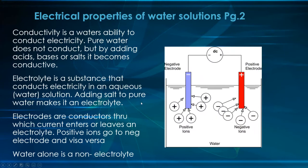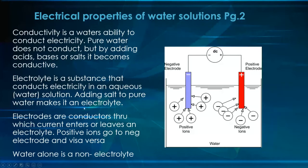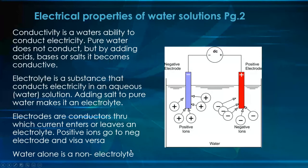An electrolyte is a substance that conducts electricity in an aqueous or water solution. Adding salt to pure water makes it an electrolyte. Electrodes are the conductors through which current enters or leaves an electrolyte. Positive ions go to the negative electrode and negative ions are attracted to the positive electrode. Pure water in its purest form is called a non-electrolyte, but we'll elaborate on that.